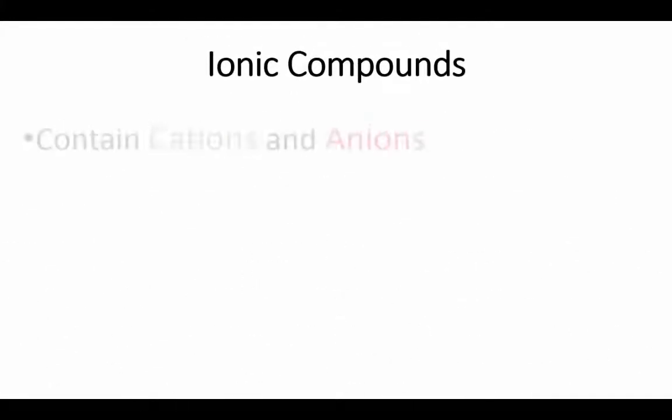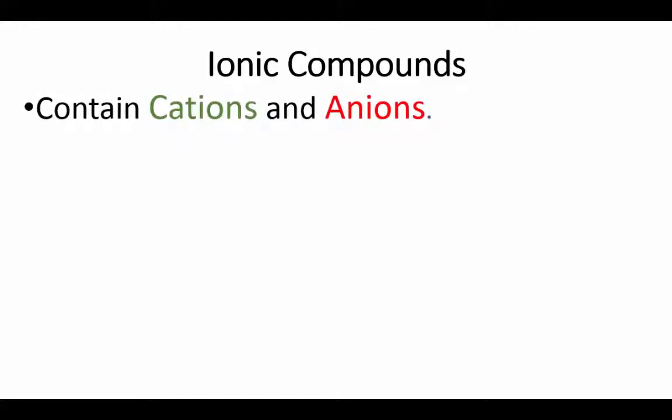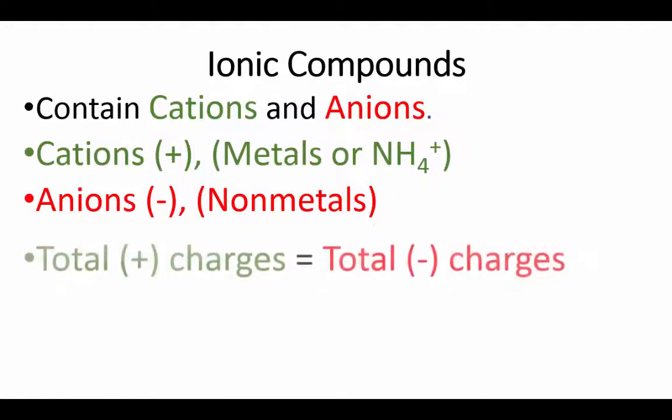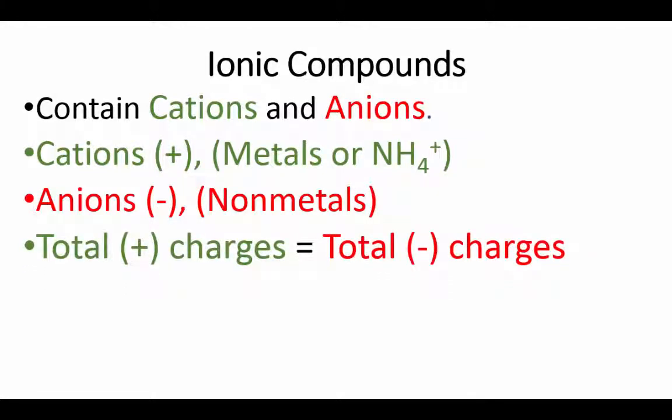Ionic compounds contain charged particles called cations and anions. The cations are positive and those are made of metals or ammonium. The anions are negative and contain non-metals. When we write formulas, the total positive charges from cations will always equal the total negative charges from anions. That's to say the compounds will be neutral. When we write names and formulas, the cations always come first.